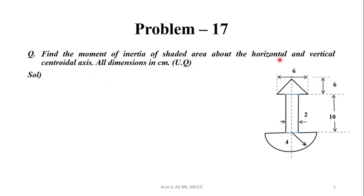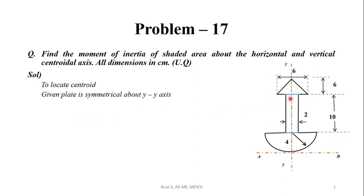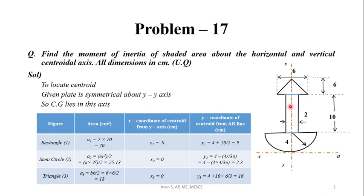Find the moment of inertia of the shaded area about the horizontal and vertical centroid axis. All dimensions are in cm. The figure is symmetric about its y-y axis, so the centroid lies on the y-y axis. We divide the figure into three parts: a rectangle, a semicircle, and a triangle.